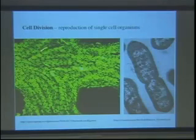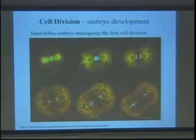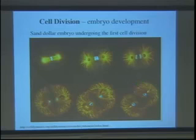Cell division is useful for replicating organisms that are single cells, like bacteria. Here is an example of early cell division in an embryo — the blue is the DNA, and the yellow are the microtubules of a sand dollar, quite spectacular looking.